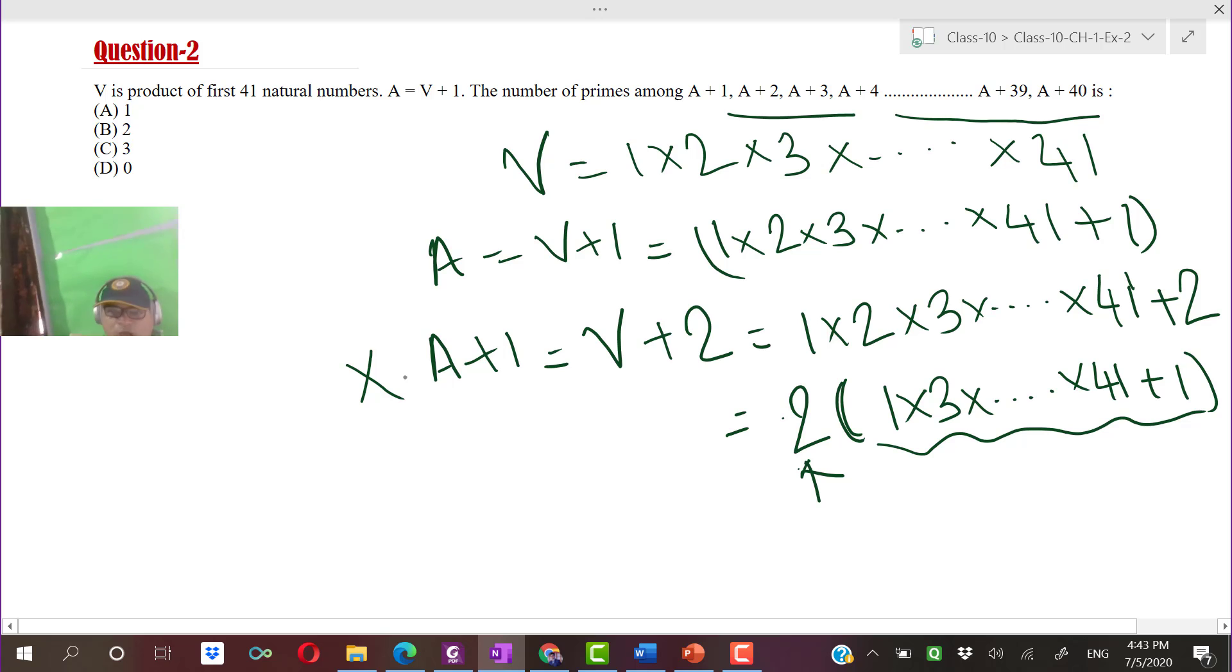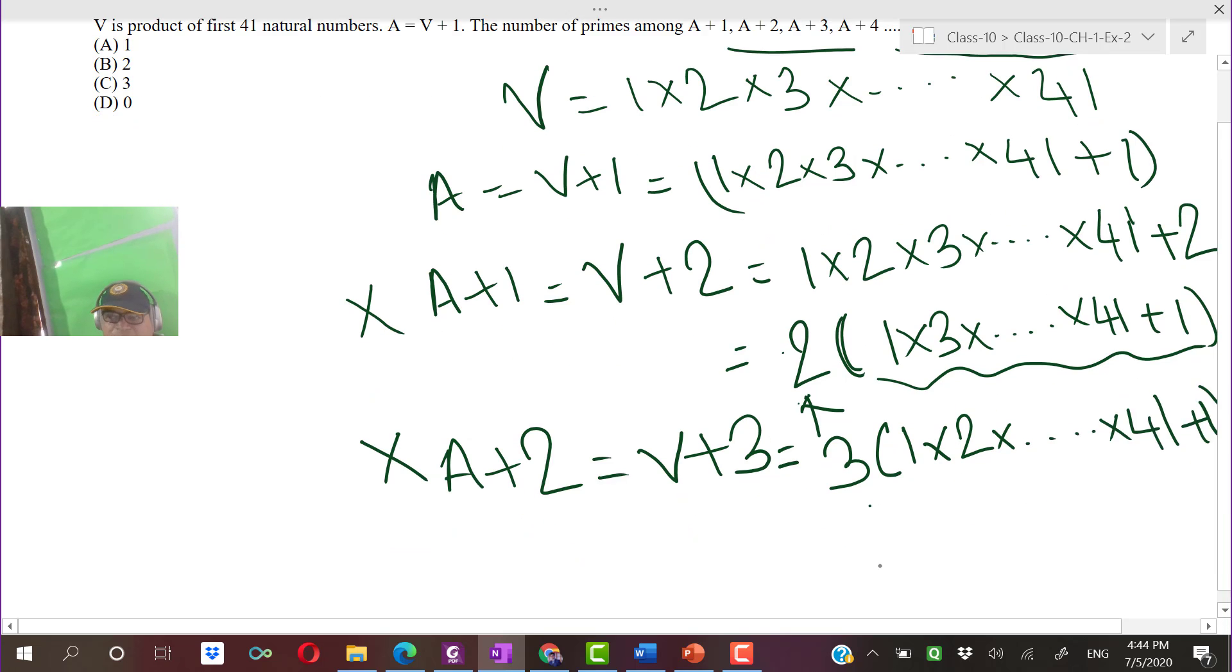Similarly, A plus 2 equals V plus 3. In this case, I can take 3 common. So this number is of the form 3 into 1 into 2 into dot dot dot up to 41, plus 1. This number is also not prime. Lastly, I will check about A plus 40.